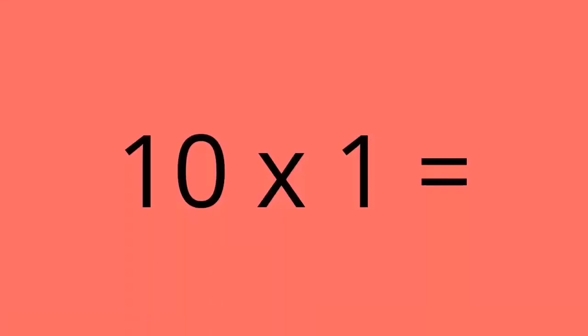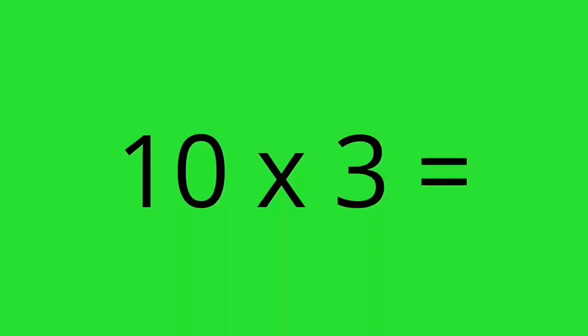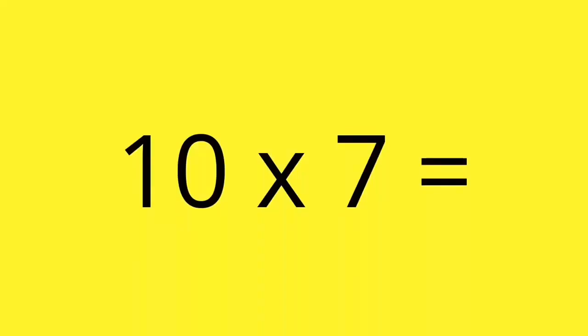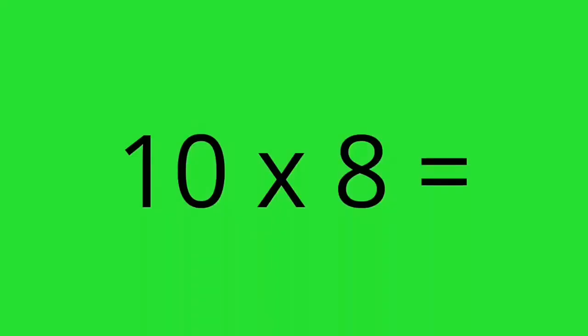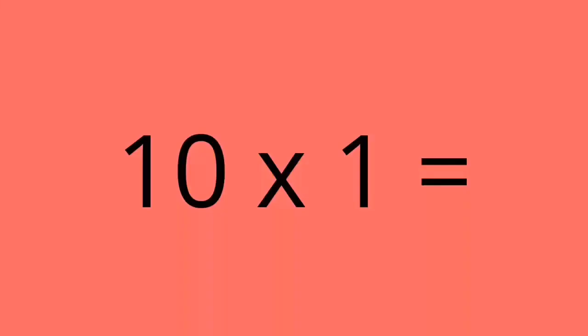10 times 1 equals 10. 10 times 2 equals 20. 10 times 3 equals 30. 10 times 4 equals 40. 10 times 5 equals 50. 10 times 6 equals 60. 10 times 7 equals 70. 10 times 8 equals 80. 10 times 9 equals 90. 10 times 10 equals 100.